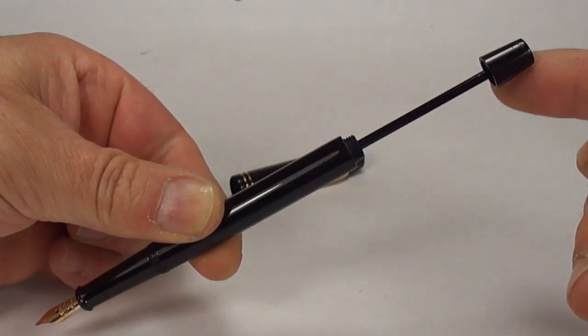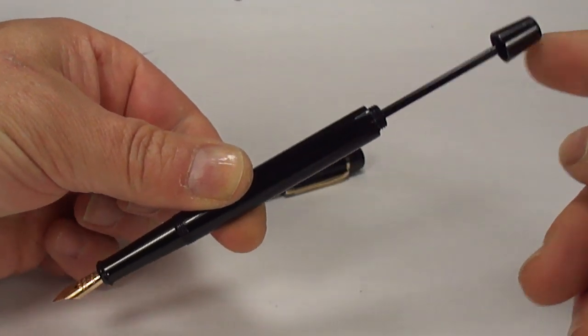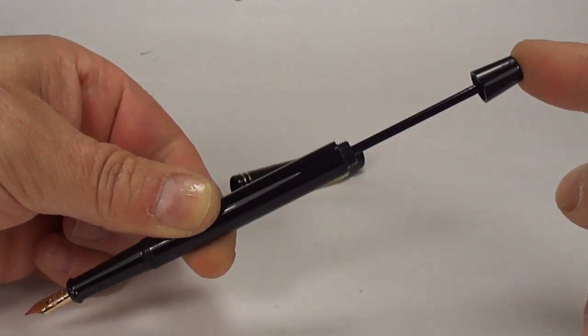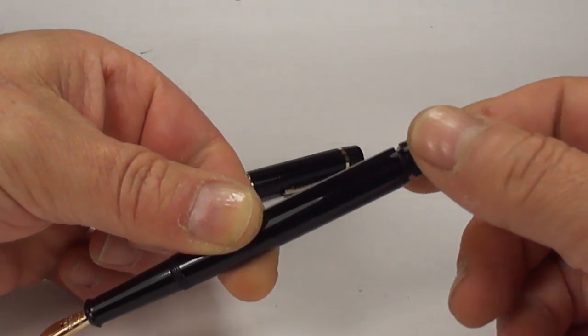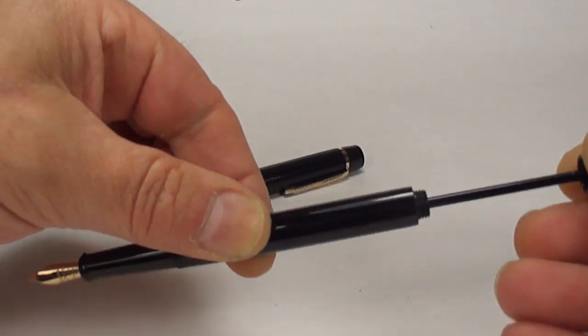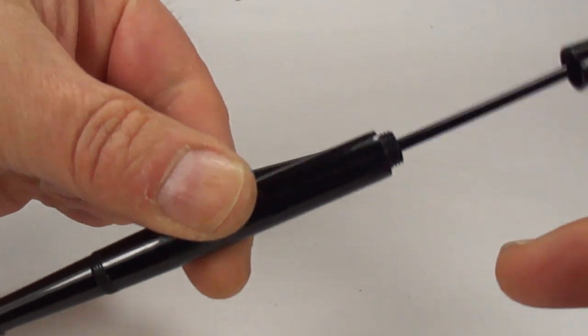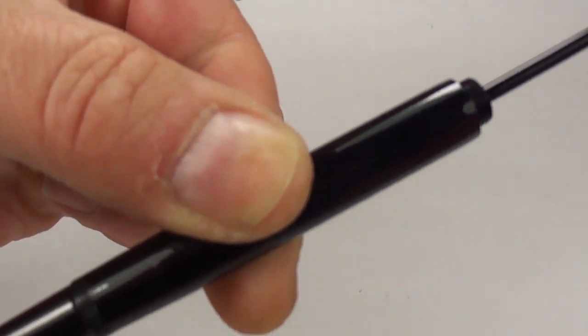Again, what we do, we simply pull this plunger knob here. And to fill the pen, what you do is simply push down on the plunger filler like so. Now, the nice thing about these particular pens, what I'll actually do, let's see if you can actually hear it.